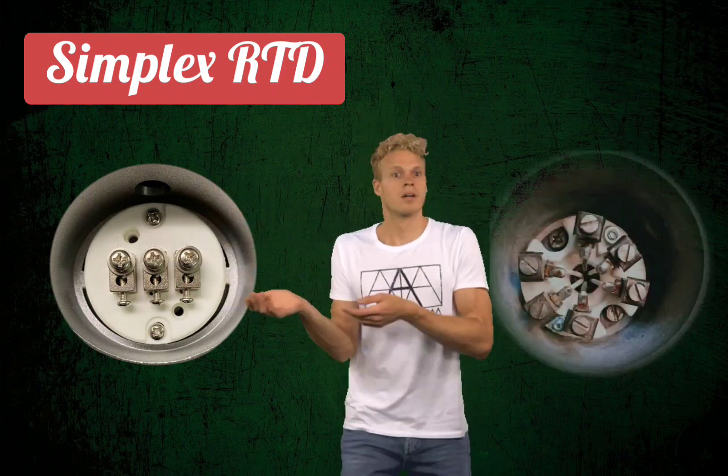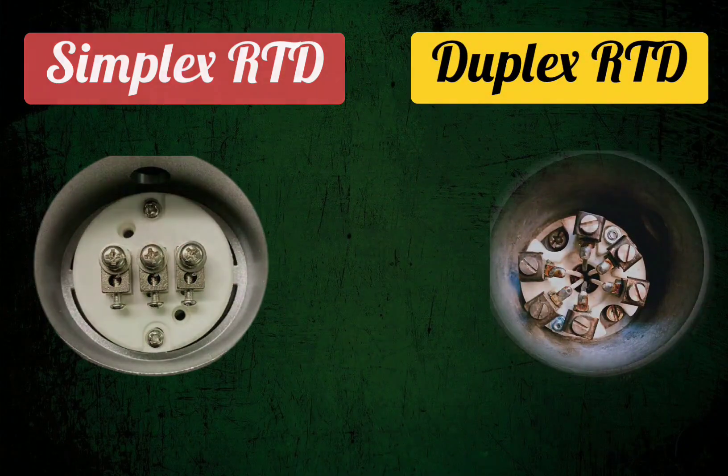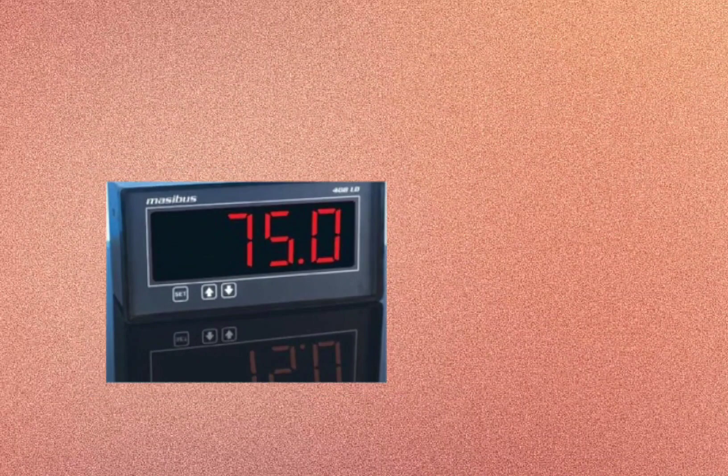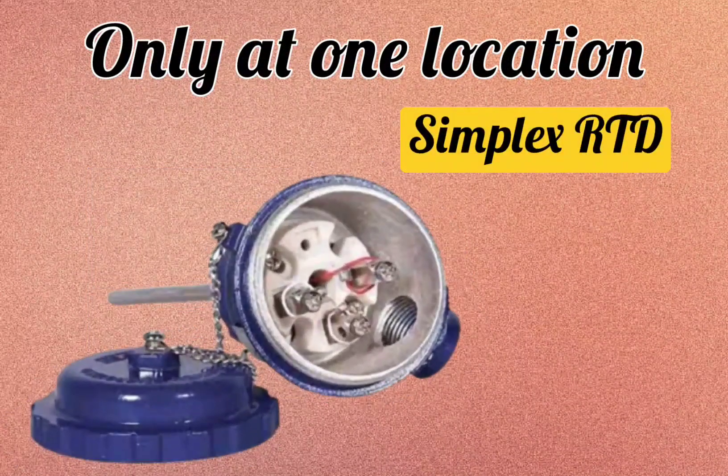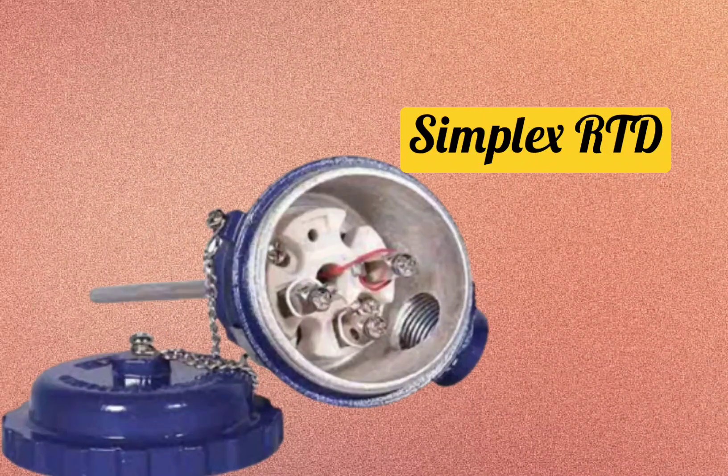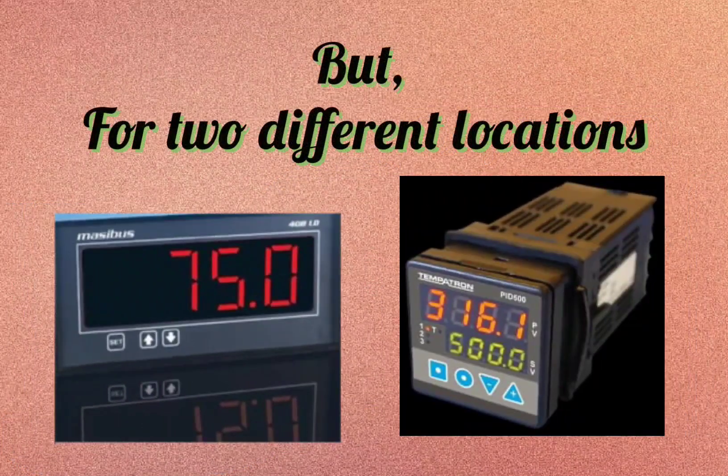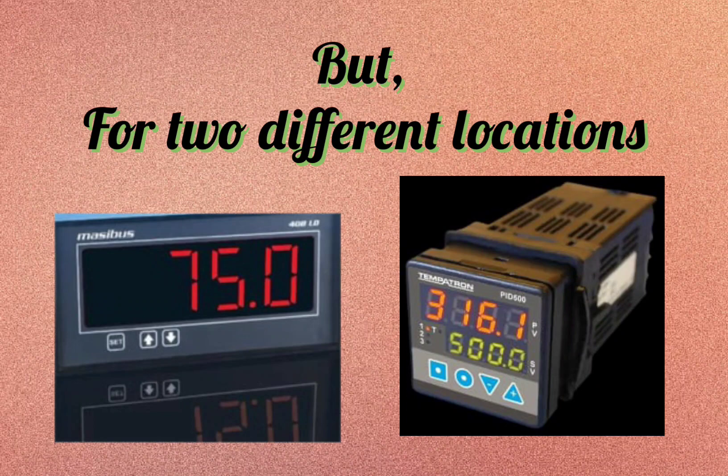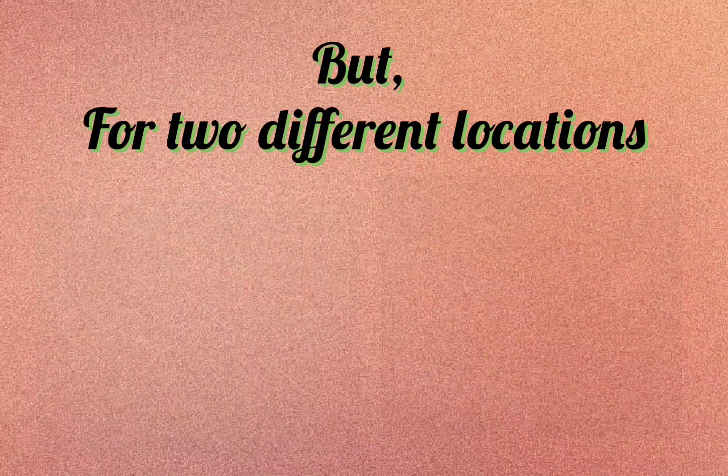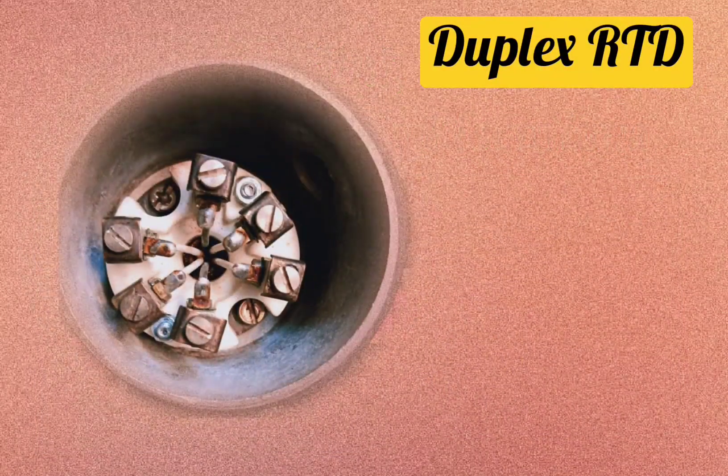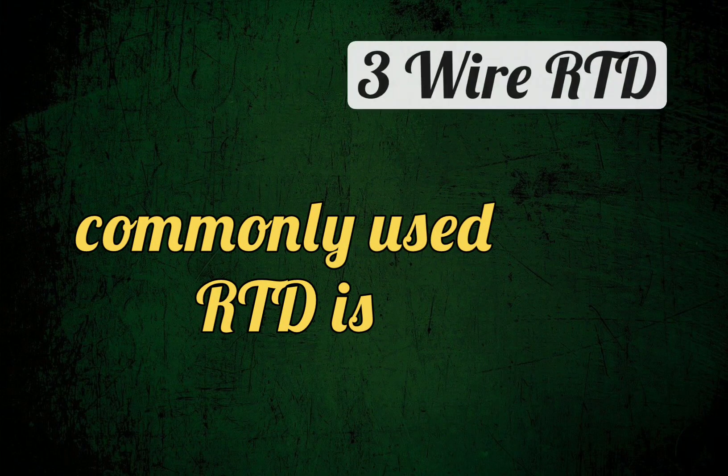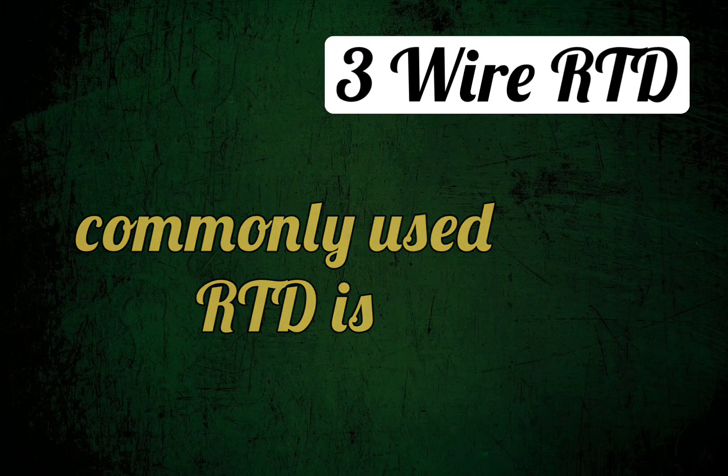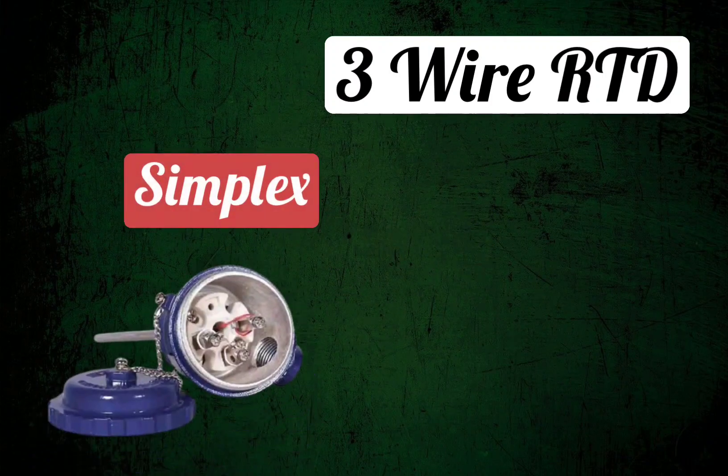First, be confirm which RTD you are going to use: simplex RTD or duplex RTD. If you want to show the temperature only at one place, then use simplex RTD. And if you want to show the temperature at two different locations, then use duplex RTD. The most commonly used RTD is three-wire RTD, whether you are using simplex or duplex.